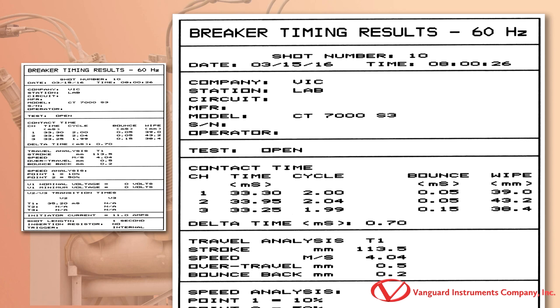The CT7000S3's frequency setting is shown in the header. The frequency value is used to convert the contact time from milliseconds to cycles.